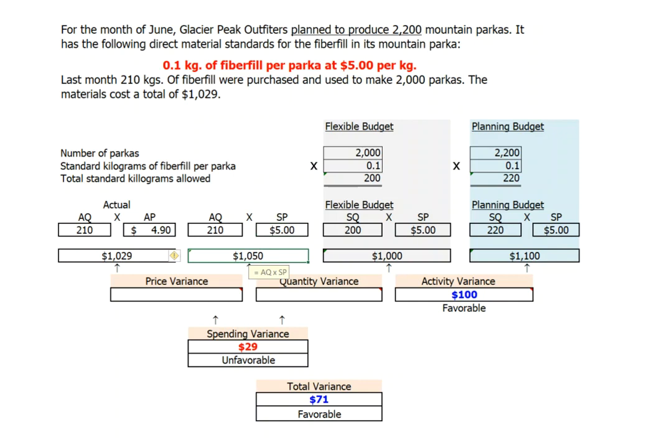The first thing we can notice about our price variance is that it would be $21, and it's going to be favorable since our $4.90 per kilogram actual cost is less than we originally budgeted. And we can also see that this favorable price variance could have been calculated by taking our $0.10 per kilogram savings, multiplying it by the 210 kilograms that we actually purchased.